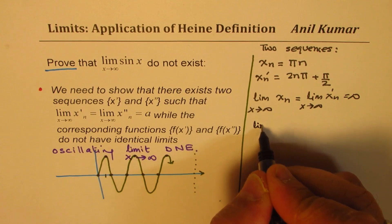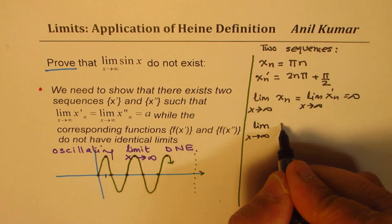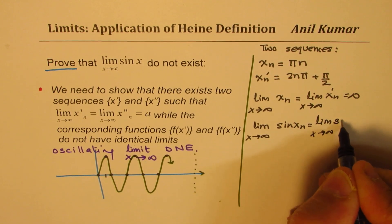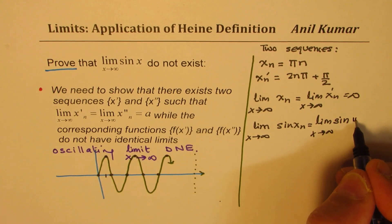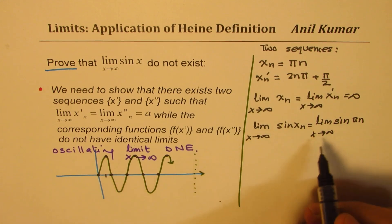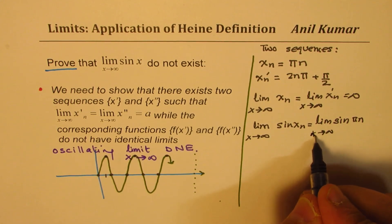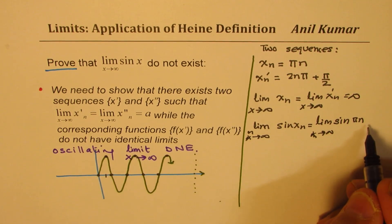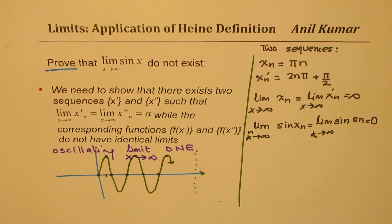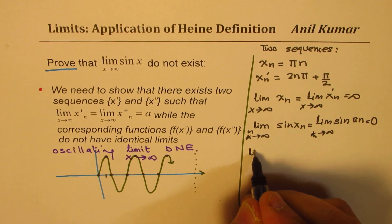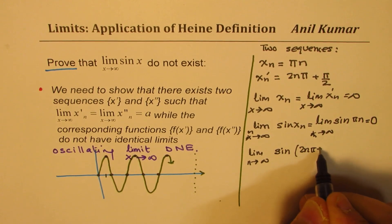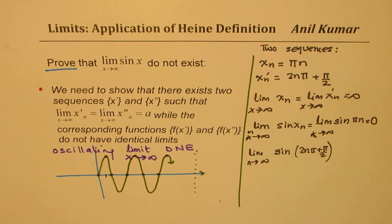Now let us find the limit of the function sine x for these two sequences. The limit as n approaches infinity for sine of xn, which is sine of nπ — for any large n, sine of nπ equals 0. So this limit is equal to 0. Now for the other sequence, the limit as n approaches infinity for sine of 2nπ + π/2 equals positive 1 for all values.